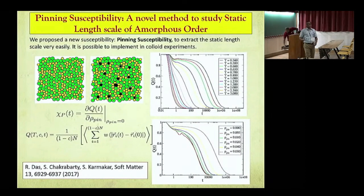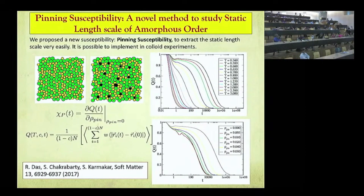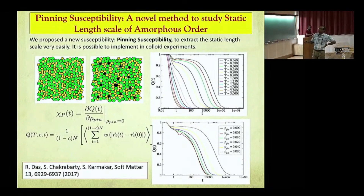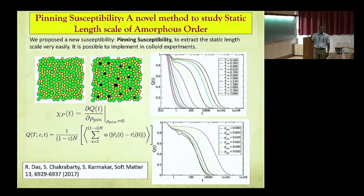Now let me tell you an interesting way to compute the same length scale — this is where the main talk starts. The idea is to look at the response of the system with and without the presence of some pinned particles. I take the original system and compute the relaxation time or the overlap correlation functions. Then I pin a few particles — the black dots — so they cannot move. Then obviously your relaxation or correlation function will decay slower. You can actually quantify this effect very nicely using the static length scale, and the next part of the discussion will convince you that the effect of pinned particles on dynamics is related to the static correlation length.